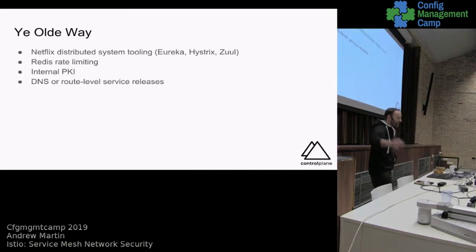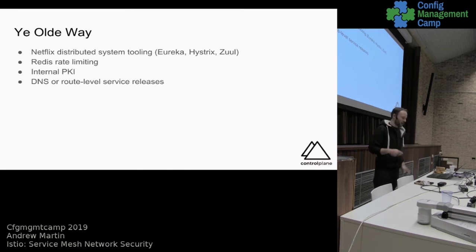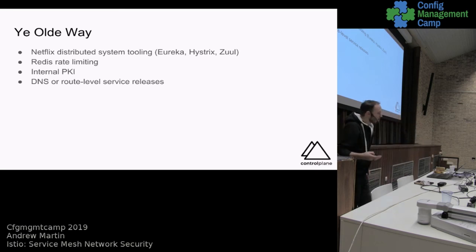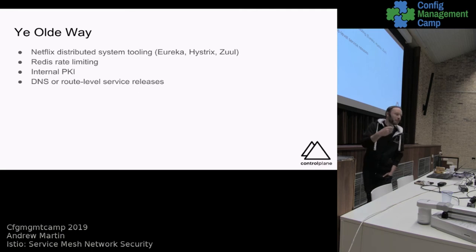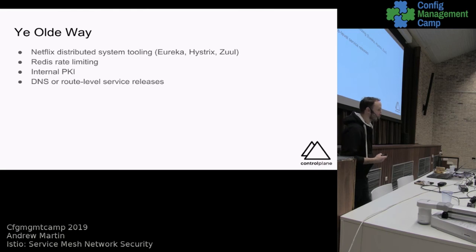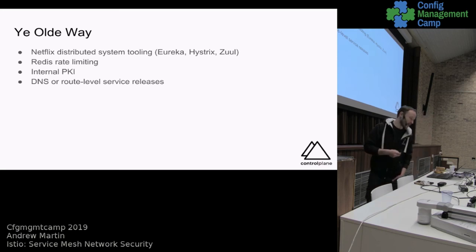To history: Netflix set the scene for microservices in general, commoditizing distributed systems with a slew of libraries over the past ten years of cloud. Their suite of tooling became JVM-based industry standard but does not offer much in terms of cross-language compatibility. There are other things we need to stand up as developers to match Istio's feature set - the most heinous of which is of course internal PKI. Nobody likes it, it's quite difficult, and if you base all your security on it at some point you're probably having a bad day.